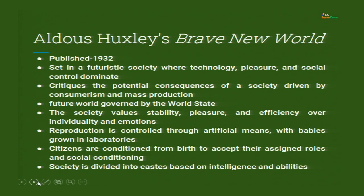Moving on to the very famous novel Brave New World by Aldous Huxley, published in 1932. It is set in a futuristic society where technology, pleasure, and social control dominate. These were the three things of utmost importance. The novel critiques the potential consequences of a society driven by consumerism and mass production. Genetic engineering is useful for this world because they are producing babies in laboratories.